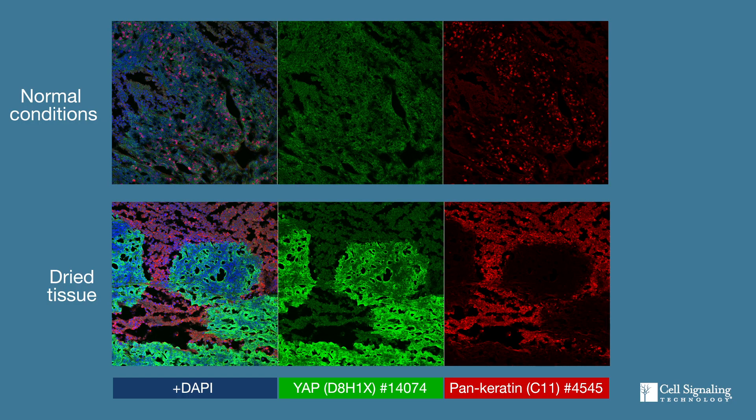Another common problem that causes too much signal is when the cells or tissue have dried out after addition of protein-containing buffers. This causes intense autofluorescence. To prevent this, make sure to change your buffers quickly, and use sufficient buffer to prevent drying during incubations. You can also make a humidified chamber — look for that video coming later.